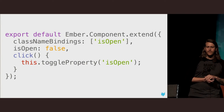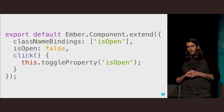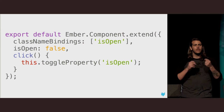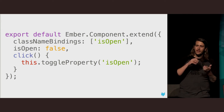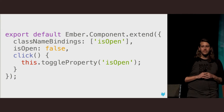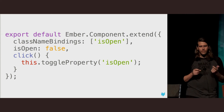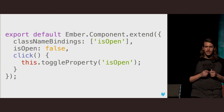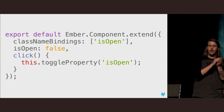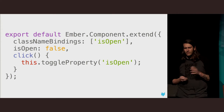An example of ephemeral state might be a component in Ember where you have an isOpen property. When you click on that component, you'd expect it to add an isOpen class and open the component. When this div is open and you refresh the page, you'd expect that div to come back in its collapsed state. That's ephemeral state.